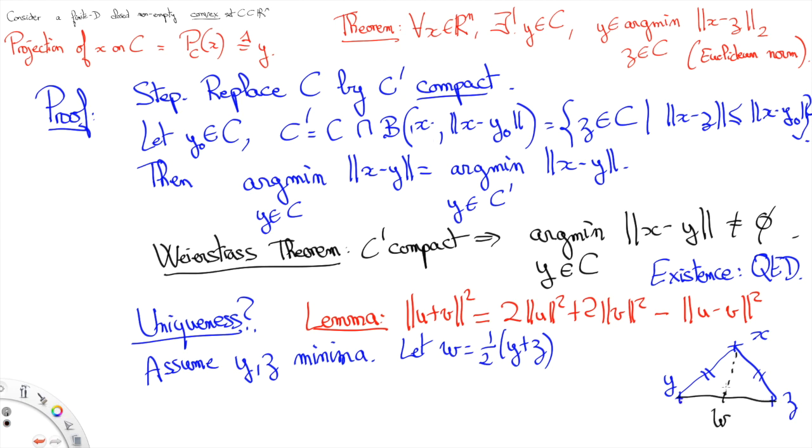Moreover because C' is convex we know that W is still in C', thus we see that W is strictly better than both Y and Z unless of course Y and Z are actually the same point. This is indeed what happens.